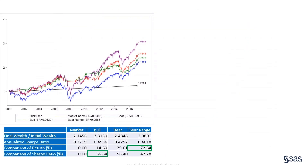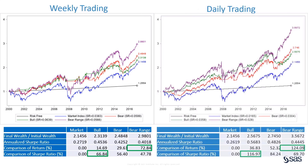In an earlier video, I showed you how to devise trading strategies based on the hidden Markov model's forecast in order to beat the market and get a 70% better return or a 70% increase in the Sharpe ratio. Here, I show you how to use the model's forecast to beat the market even more successfully, getting a 120% better return or a 120% increase in the Sharpe ratio.